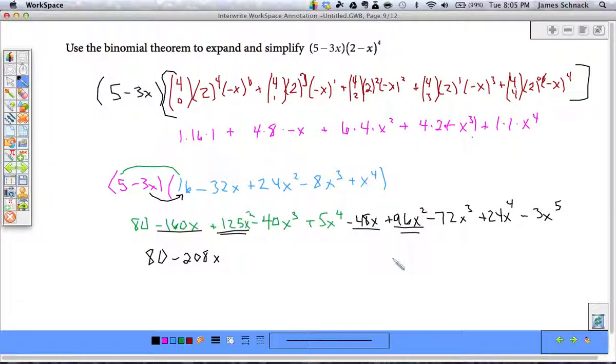I have x squared in a couple places. I have a total of 221x squared. I've got x cubed. Negative 40 minus 72. That's going to be negative 112x cubed.